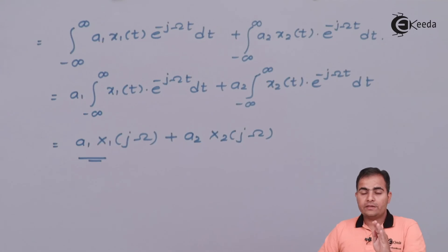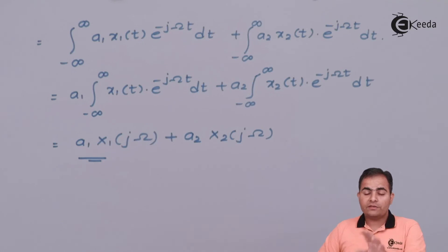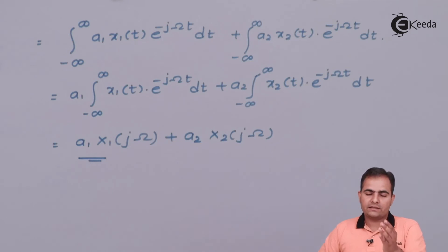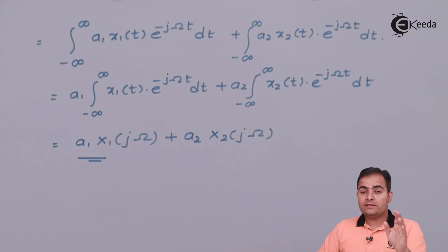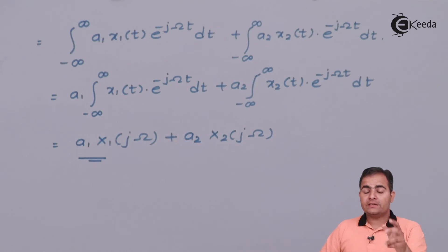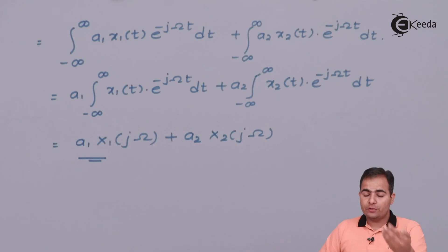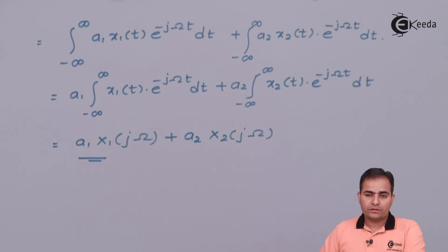According to the linearity property, we can find the Fourier transform of both functions separately when there is a plus or minus sign between them. If the functions are in product form, or in numerator and denominator, then we will use different ways to find the solution.